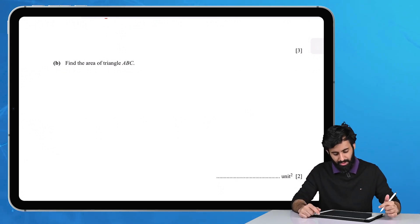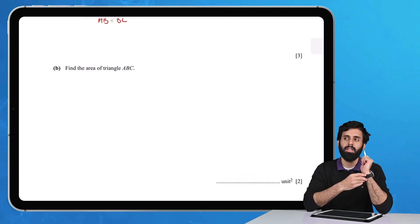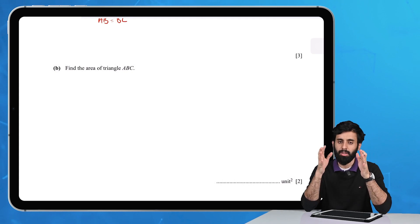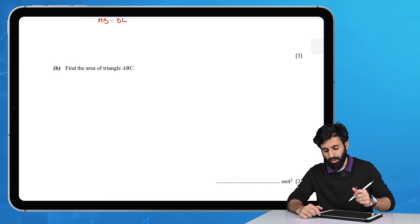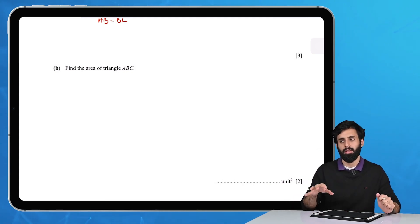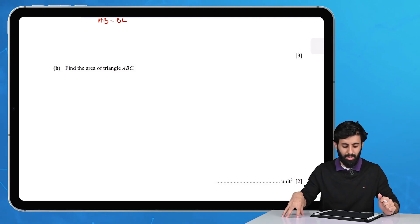Part B says find the area of triangle ABC. Your safest bet when you know the coordinates is to first plot these points. I don't mean mark them accurately, just make a rough sketch.